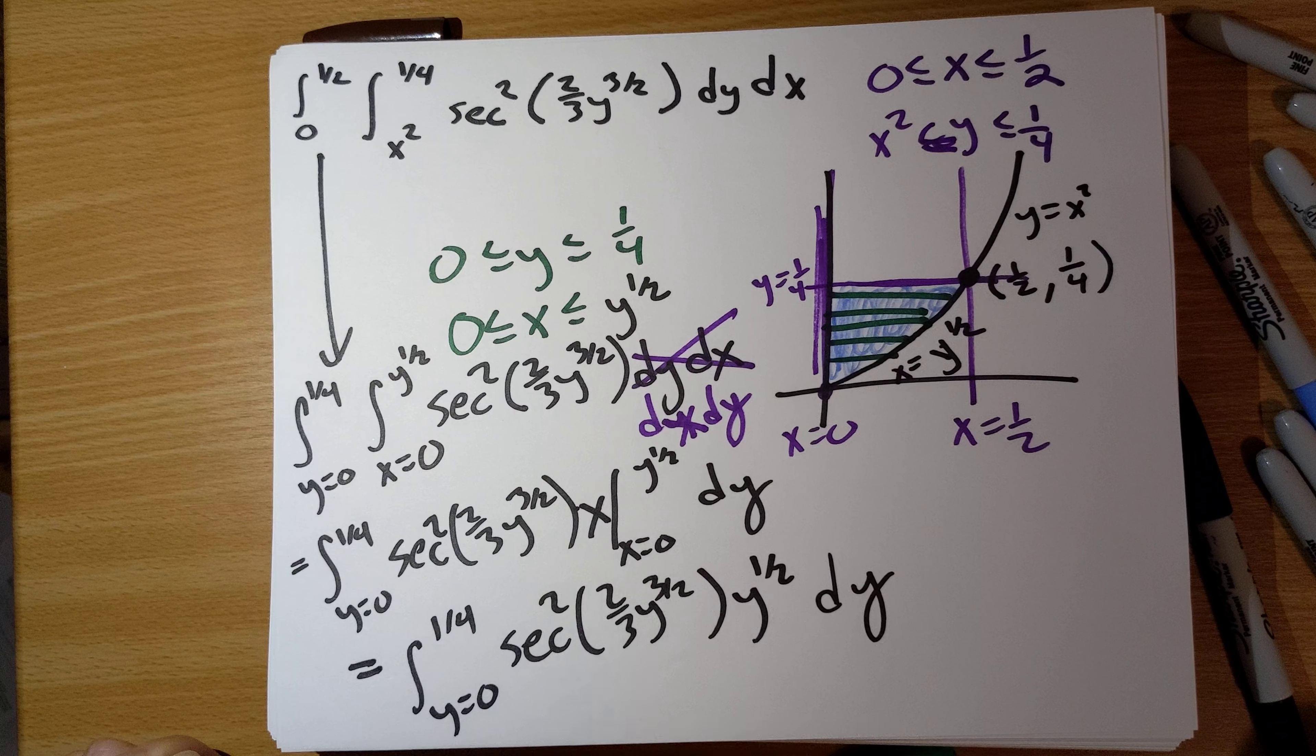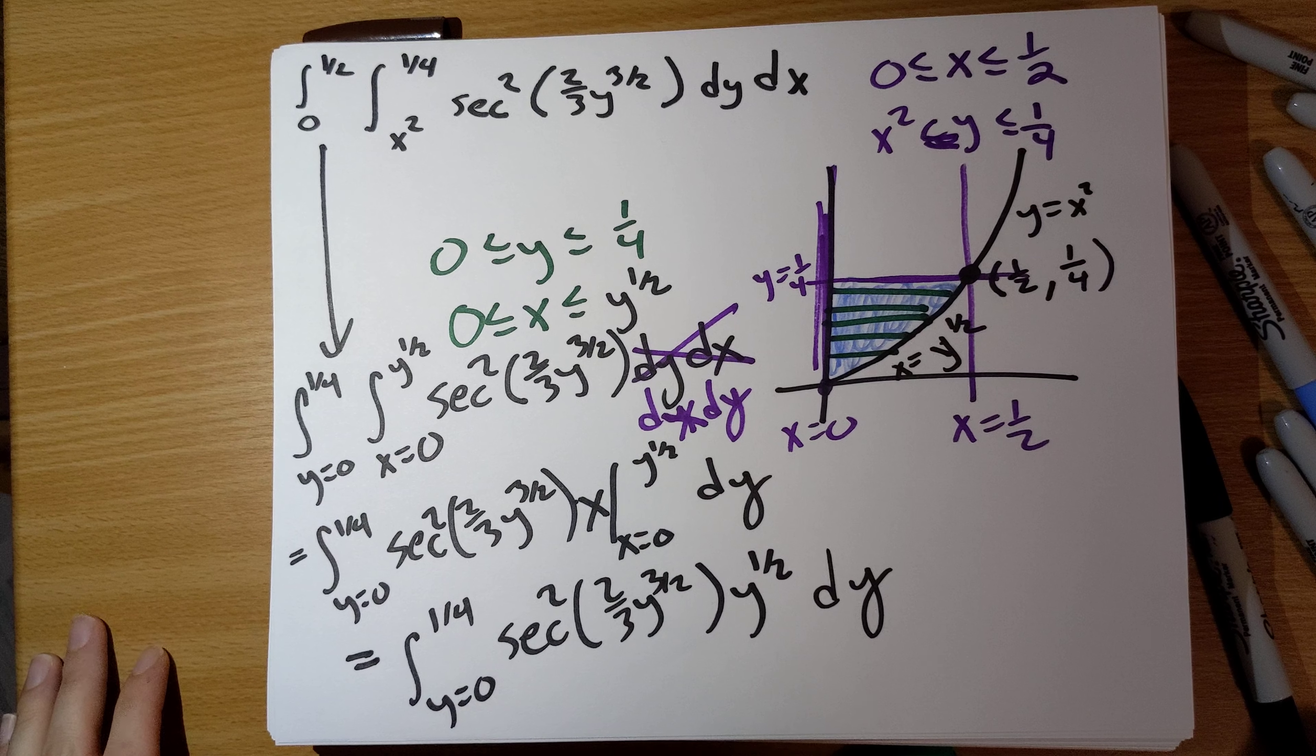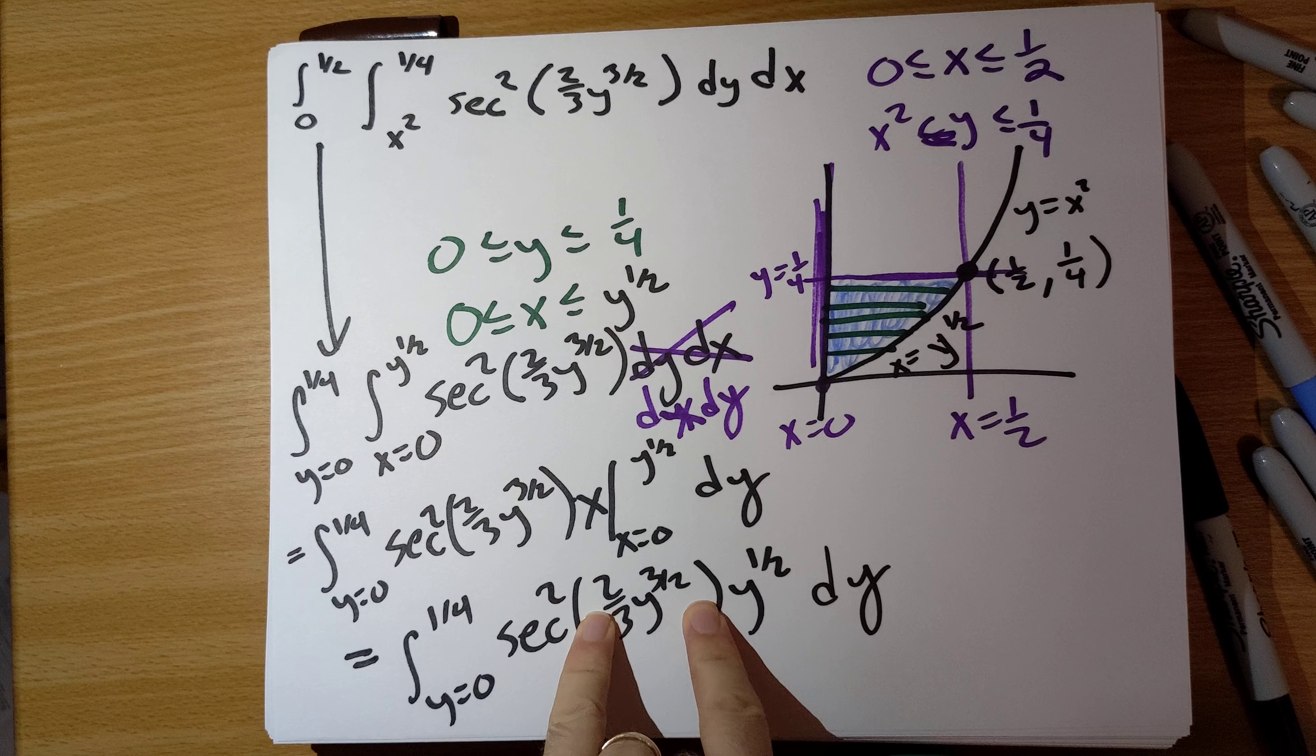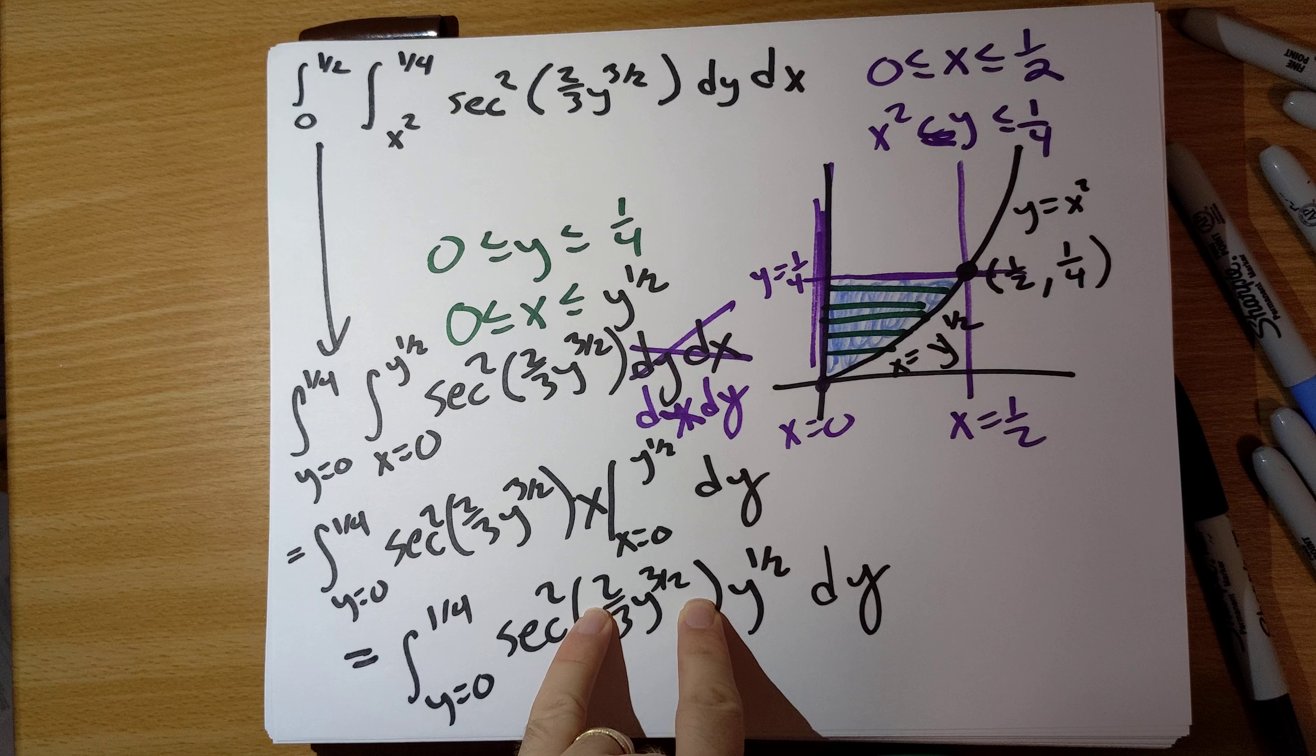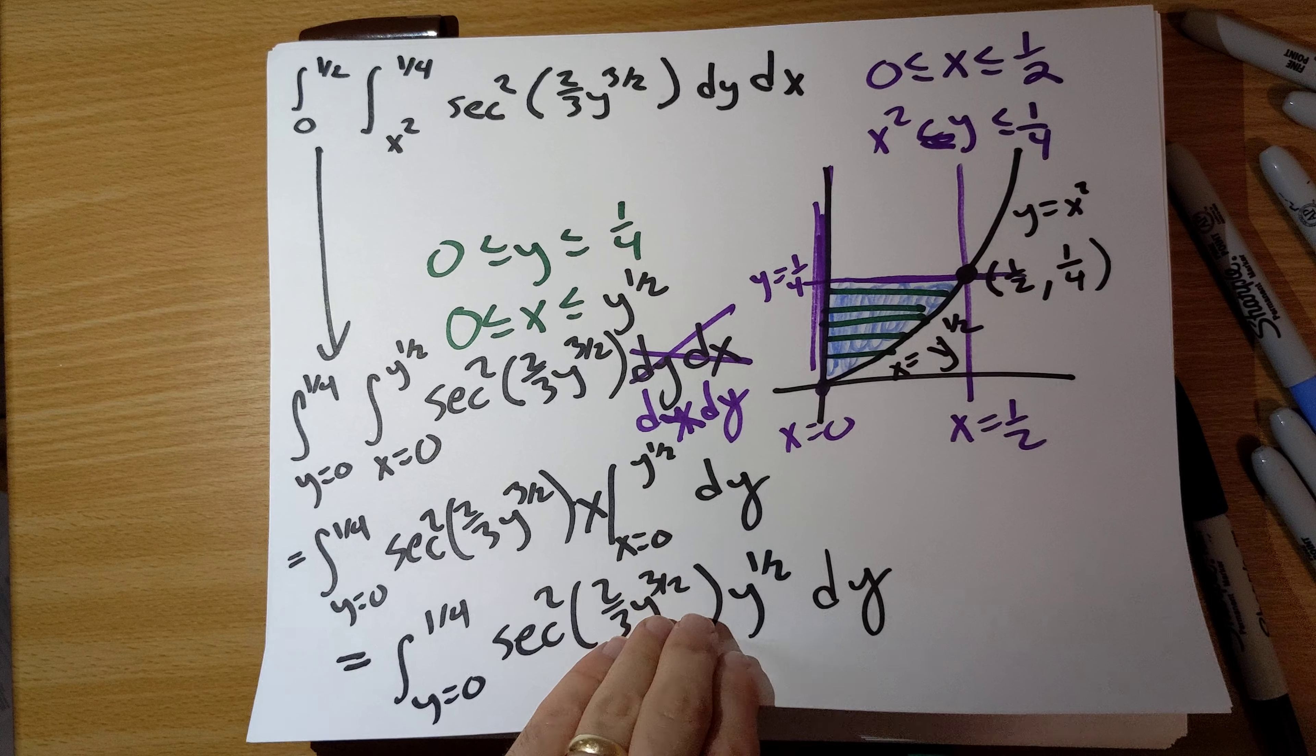So first integration down, one more to go. This still might look tricky here, but the key thing to realize is that the derivative of 2/3 y to the 3/2 is going to be y to the 1/2. And so this suggests a substitution.